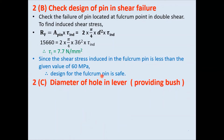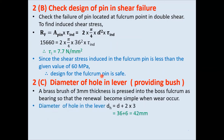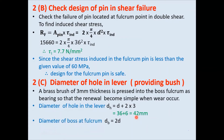Step 2c: find the diameter of hole and boss for the lever. Provide a brass bush of 3 mm thickness, pressed into the boss at the fulcrum, so that in case of wear, renewal becomes simple. Diameter of hole in the lever = d + 6 = 42 mm. Diameter of boss = 2d = 72 mm.